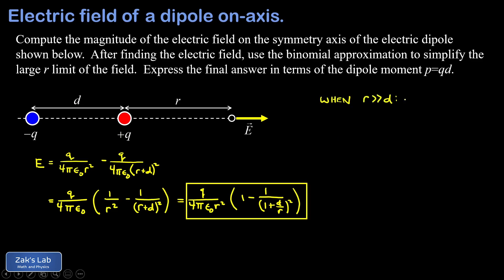So when I say the large r approximation, I mean when the distance from this dipole is much greater than the separation between the two charges, so when r is much greater than d. In that limit, d over r must be a very small thing. And here's where we recognize the opportunity to use a binomial approximation. Whenever we have one plus a small thing raised to a power, we can use a Taylor polynomial to approximate this thing.